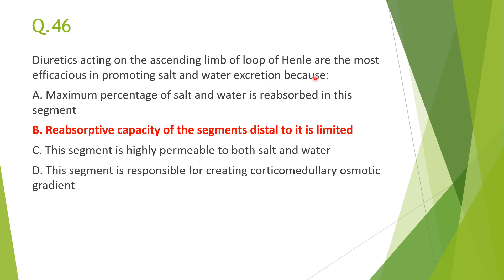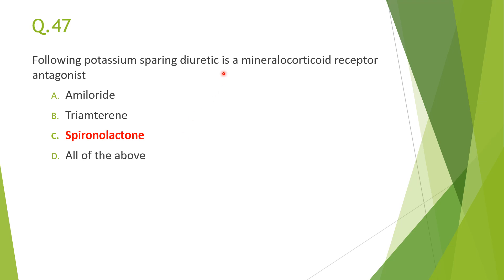Next: diuretics acting on the ascending limb of the loop of Henle are the most efficacious in promoting salt and water excretion — they are called high-ceiling diuretics, like furosemide. They are highly efficacious because the reabsorptive capacity of segments distal to the ascending limb — distal tubule and collecting duct — is limited, so even if reabsorption is partially inhibited distally, the effect is minimal.